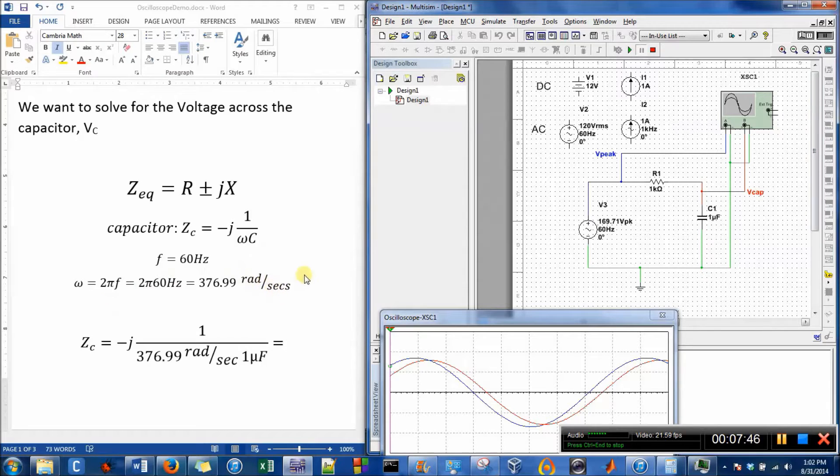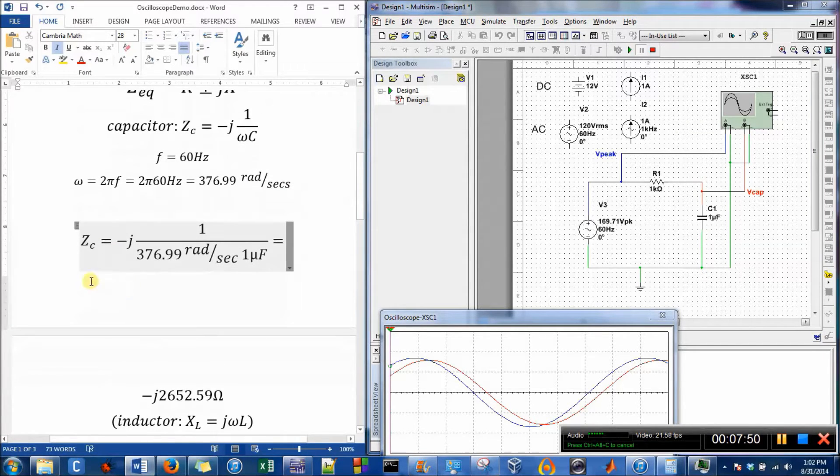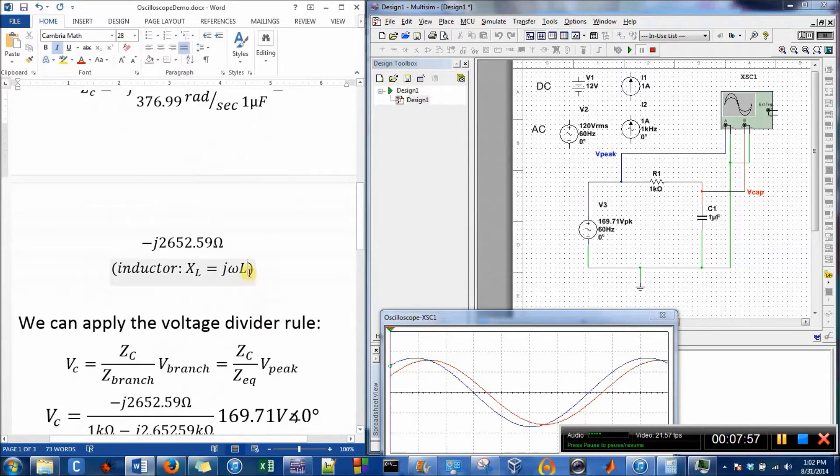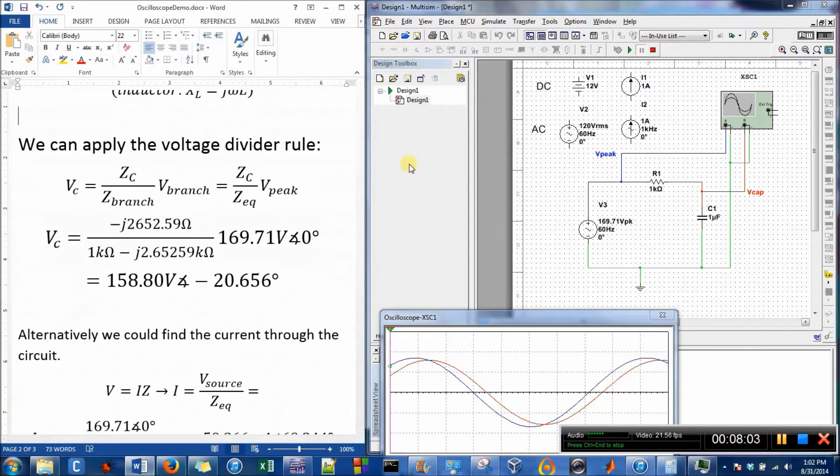That's measured in radians per second. I go through and calculate the impedance of the capacitor. This is what it would be if that were an inductor. Now we can apply the voltage divider rule.